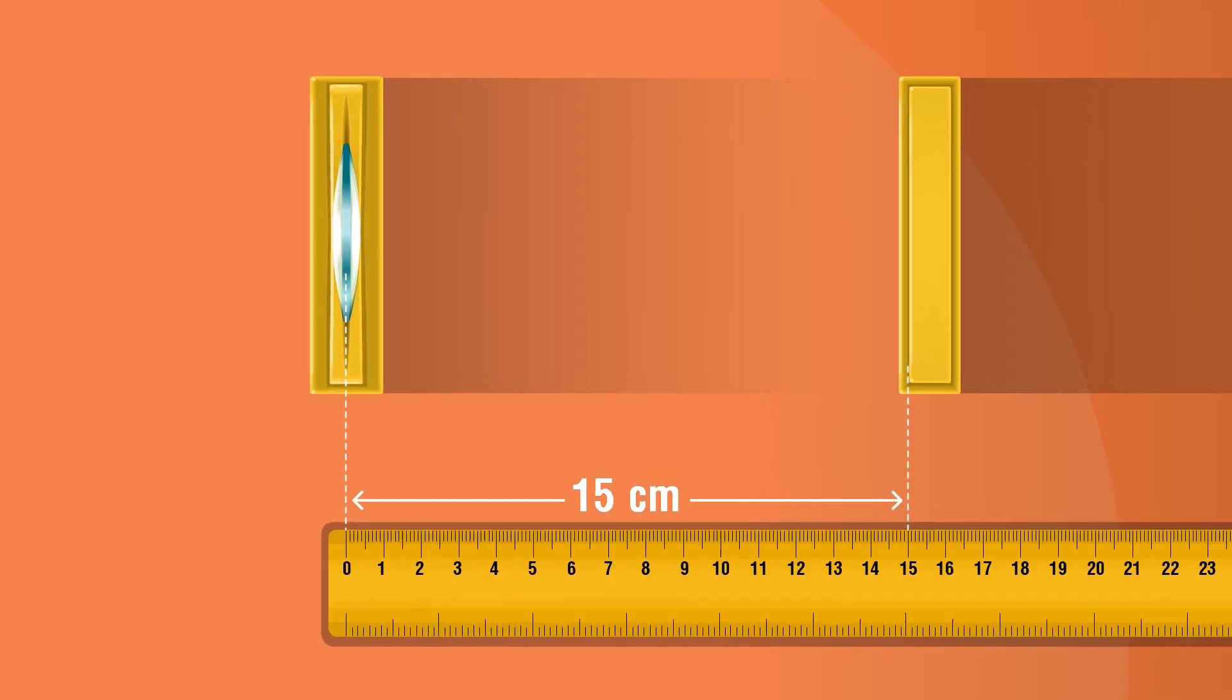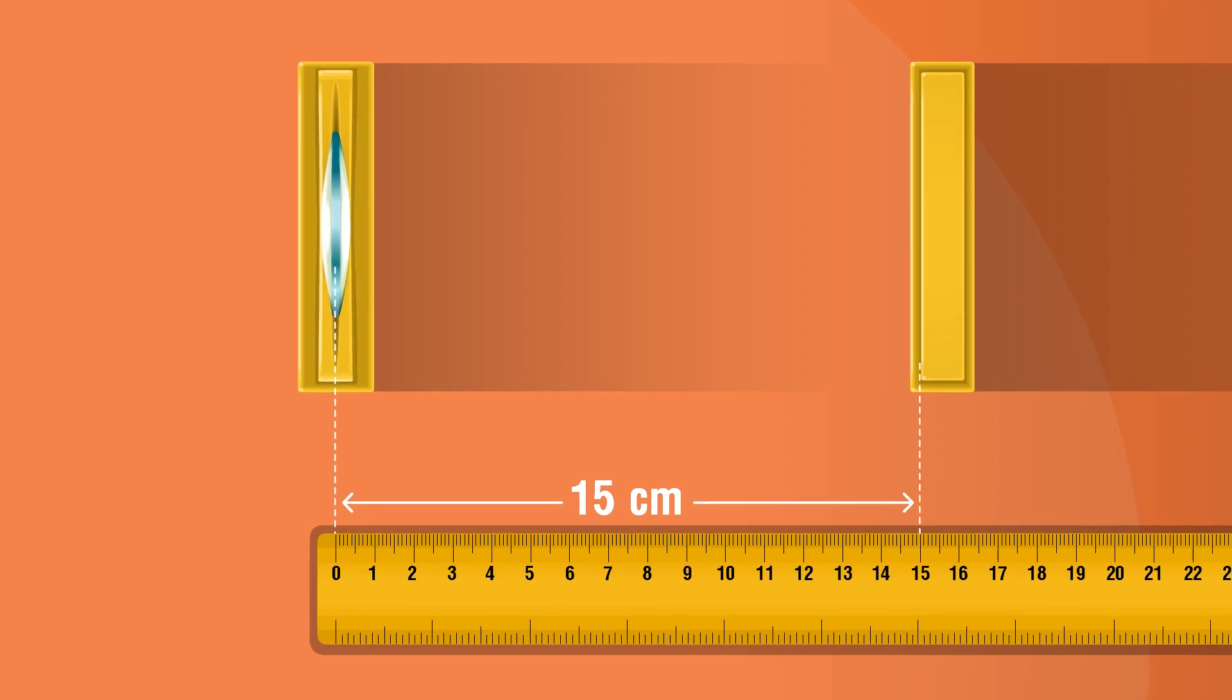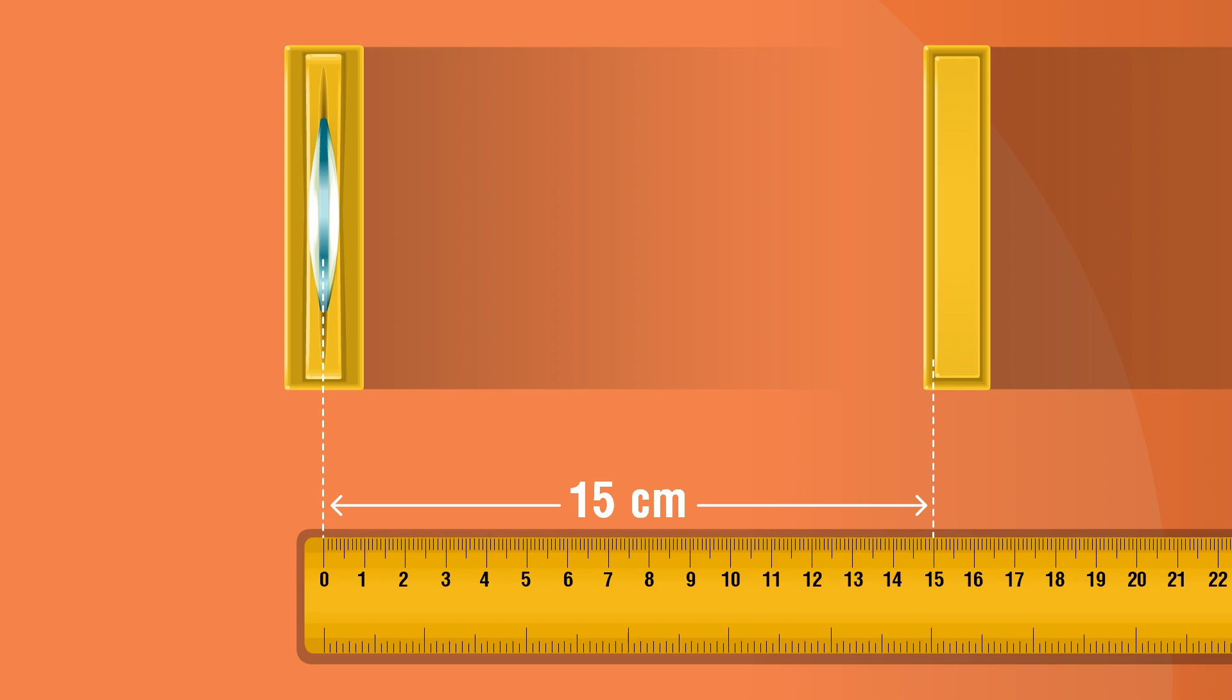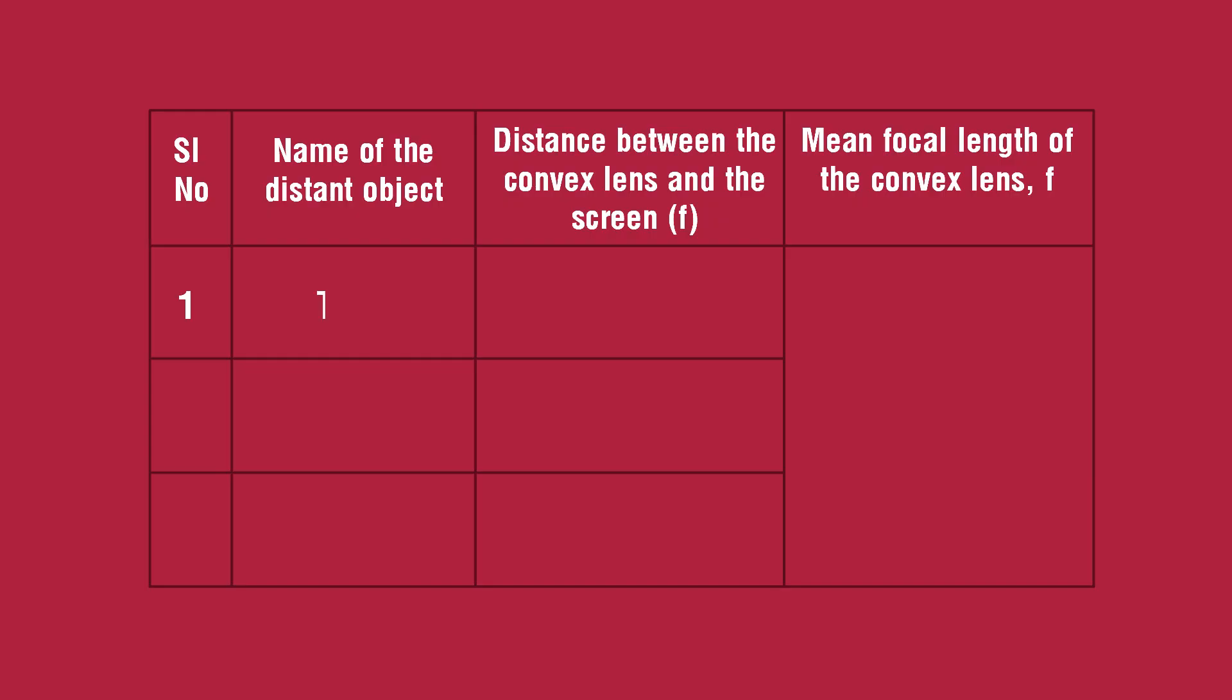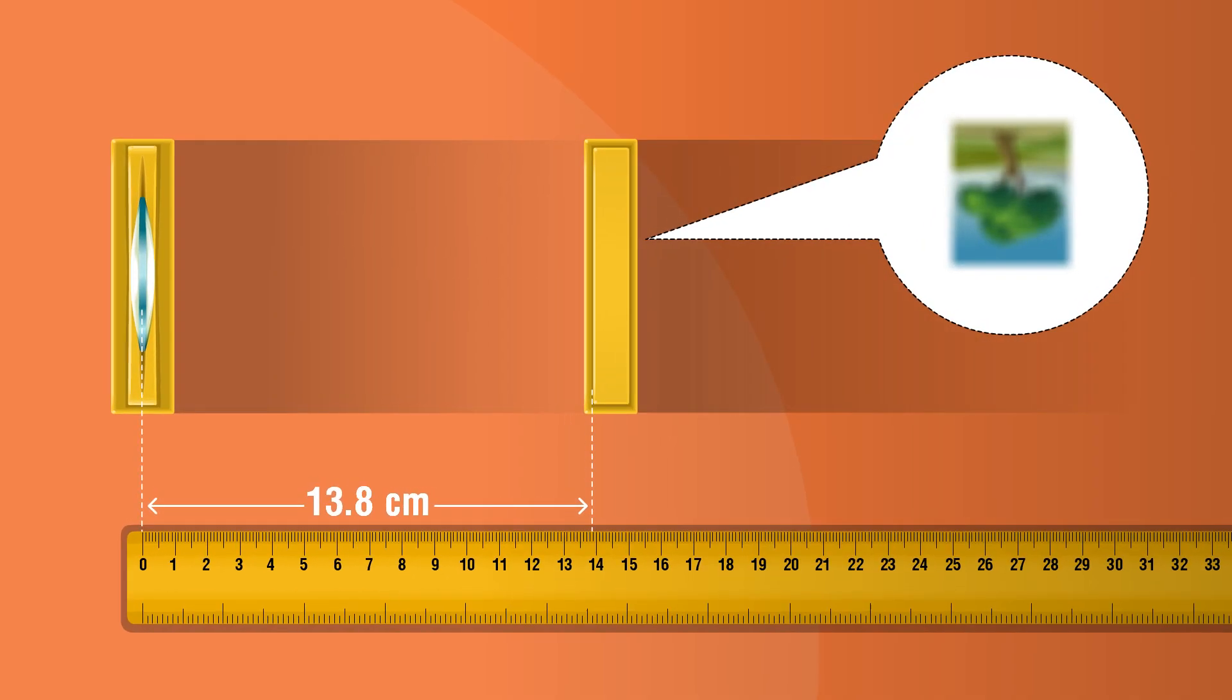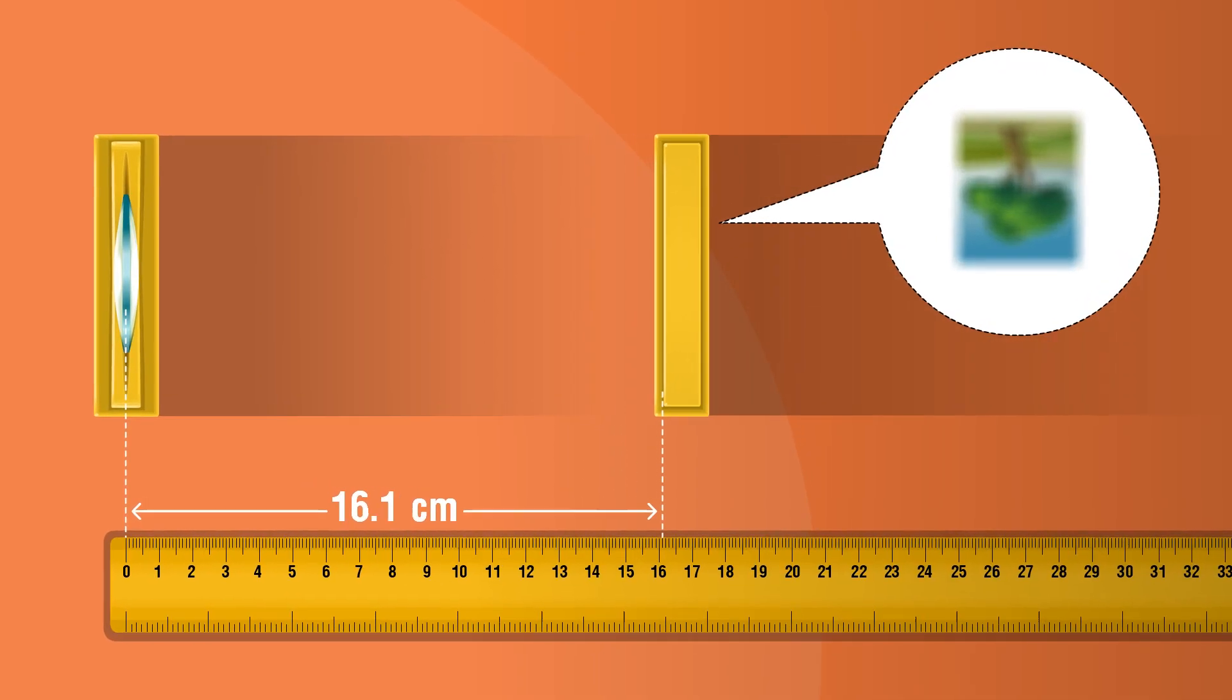Measure the distance between the screen and the optical center of the convex lens using a measuring scale. Record the observation as the focal length of the convex lens. Repeat the experiment at least three times and record it in the observation table.